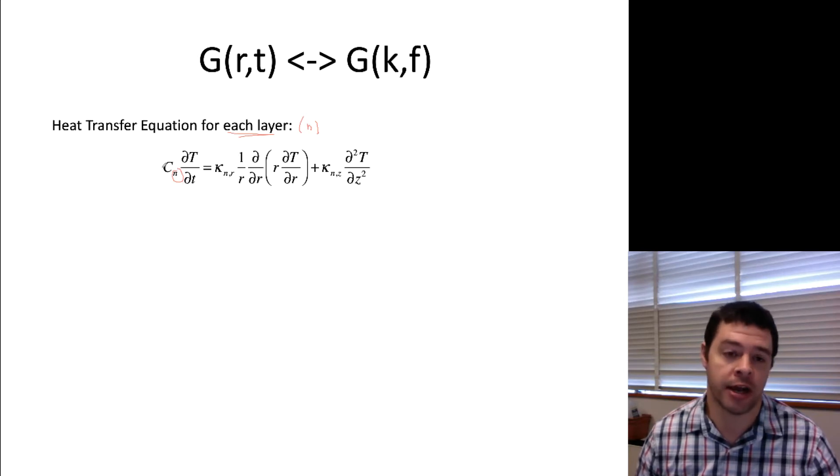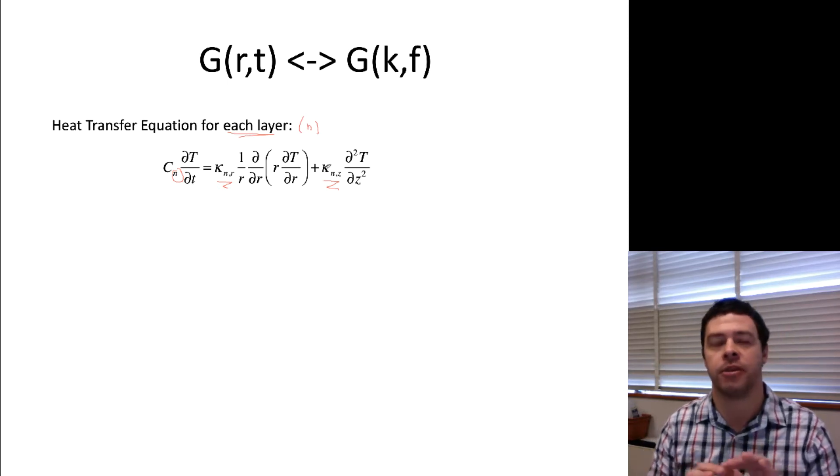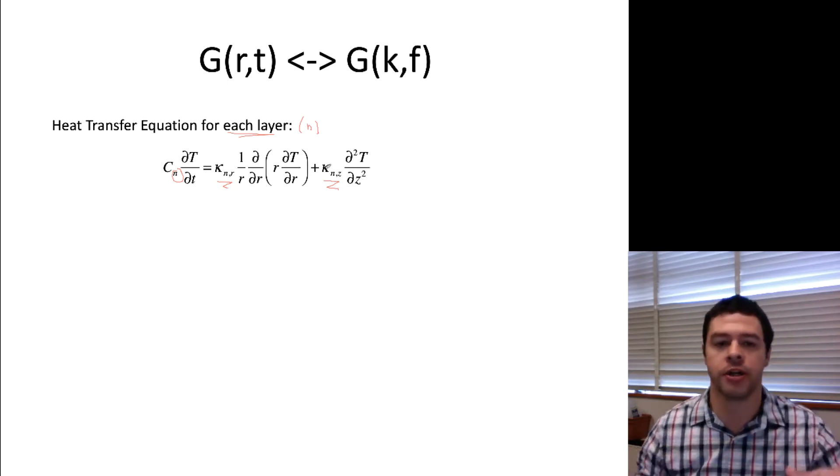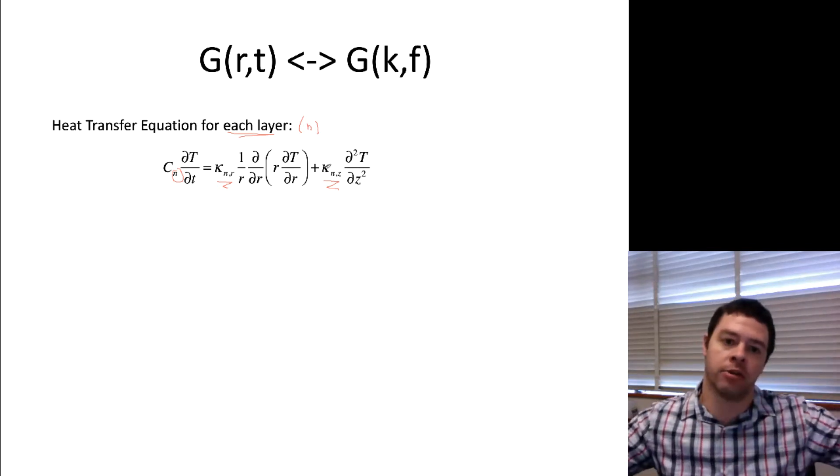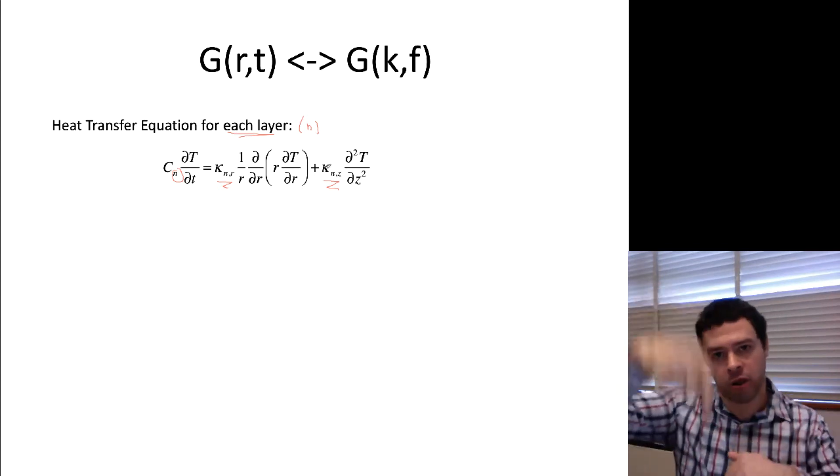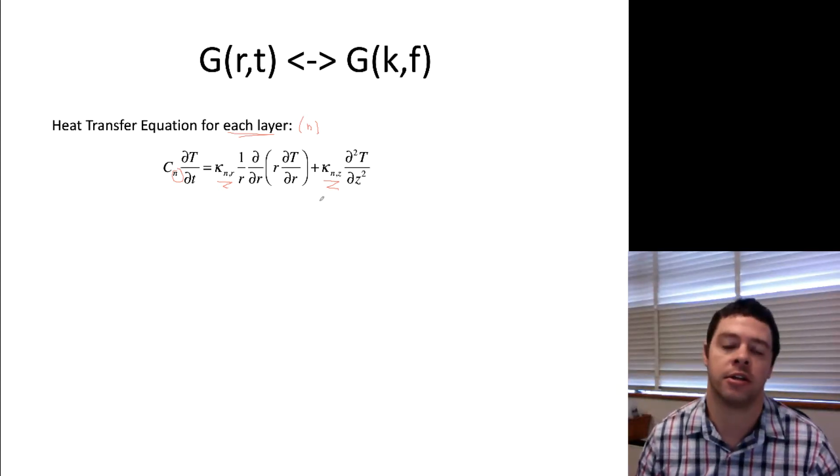So what I'm going to do is write that out. So this is the diffusion equation, so I have the heat capacity times the transient term equals essentially the Laplacian of the temperature. The only thing that I've done here that's a little bit unusual is that I tried to separately write the thermal conductivity in the in-plane and the through-plane direction. So remember that I'm trying to work in cylindrical coordinates. So in cylindrical coordinates, the maximum anisotropy I can handle would be an in-plane thermal conductivity in the radial direction and a through-plane thermal conductivity in the z direction.